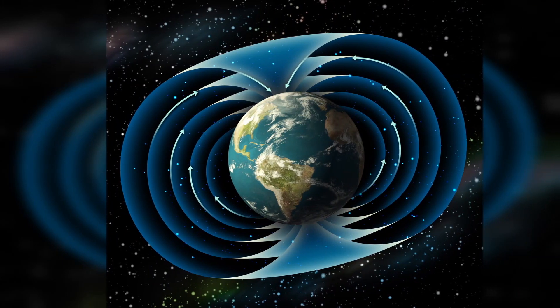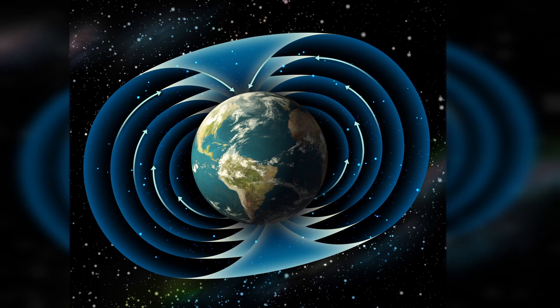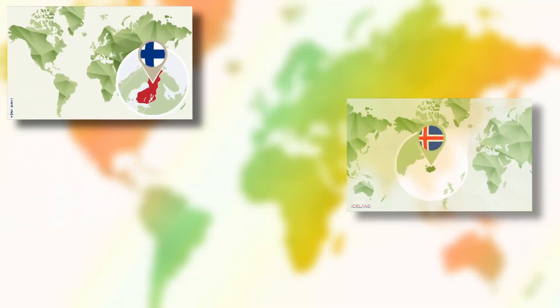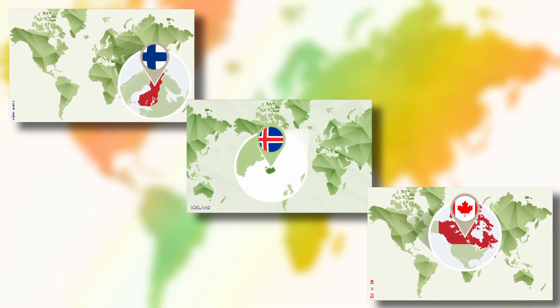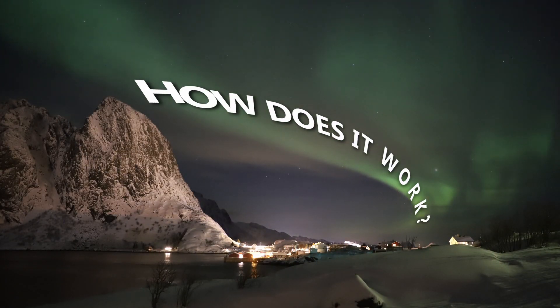Best chances of seeing them are in the northern parts of the northern hemisphere where the field lines of the Earth's magnetic field run. Places like Scandinavia, Iceland or Canada would be a good option. But how do they actually work and why do they appear in such a beautiful way?